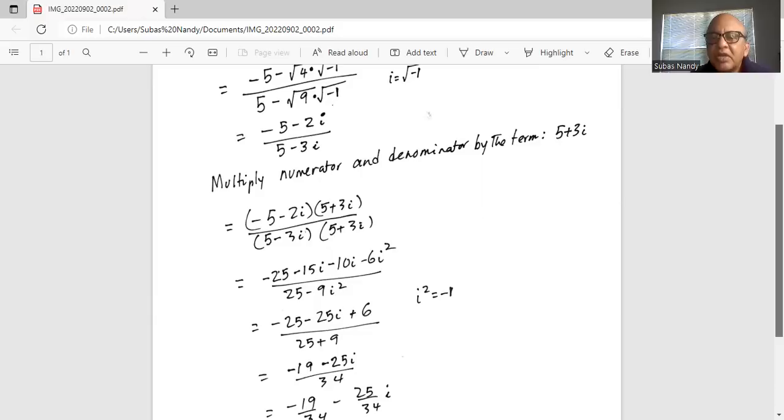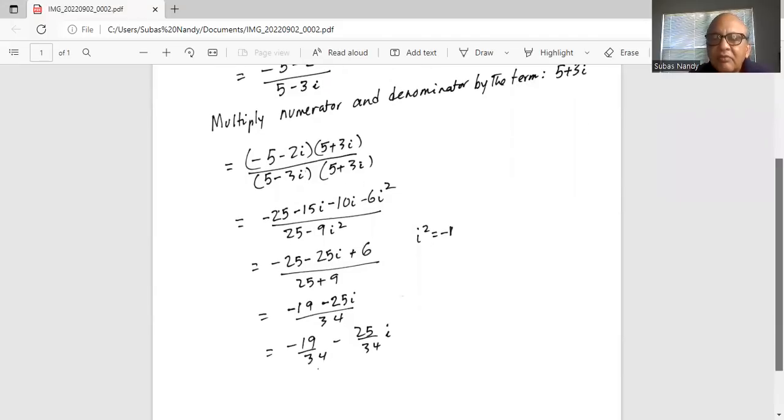So the numerator is minus 25 plus 6. 25 is greater than 6, so from 25 you subtract 6, which is 19. But the greater number has a negative sign, so it is minus 19 minus 25i in the numerator. In the denominator, 25 plus 9 is 34.